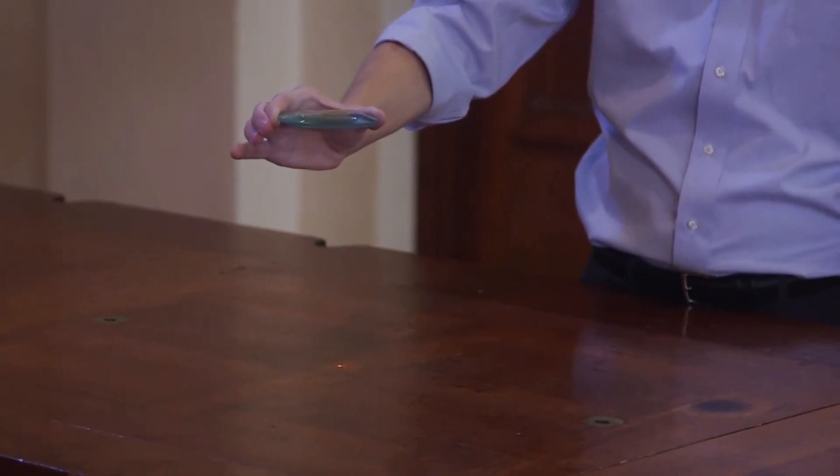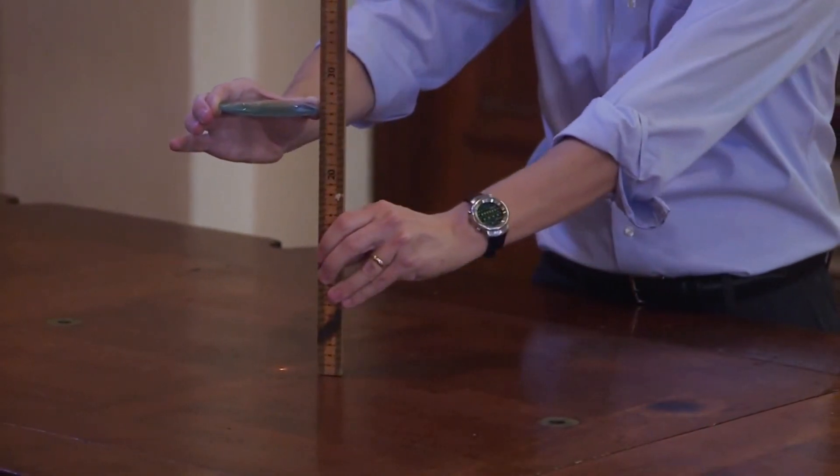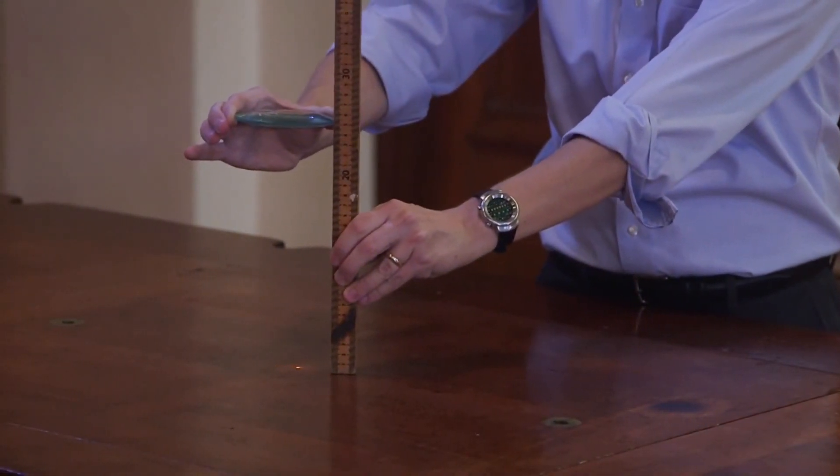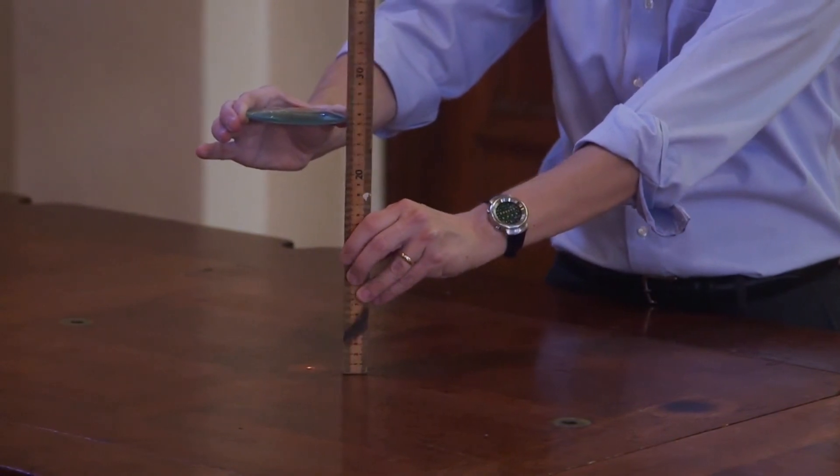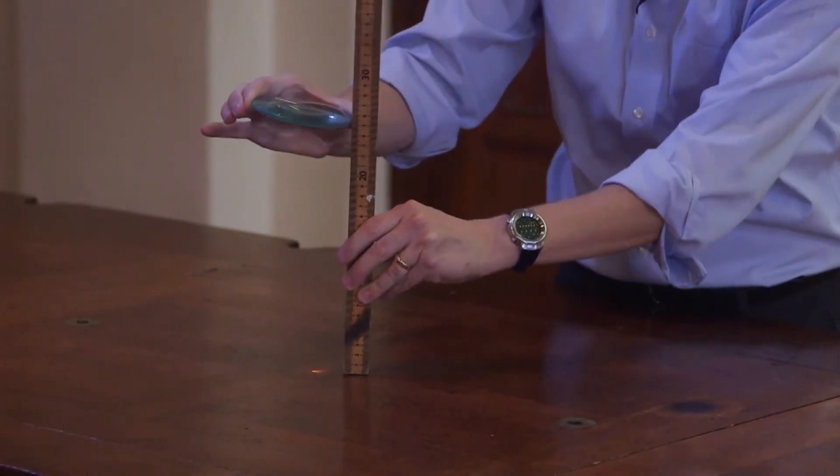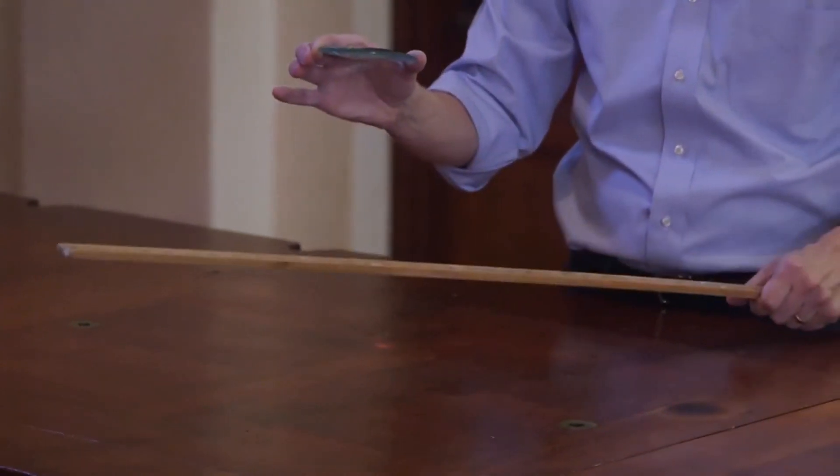And now what you can do is take a ruler and you can kind of measure the distance. So you get that this is about a 26 centimeter focal length lens.